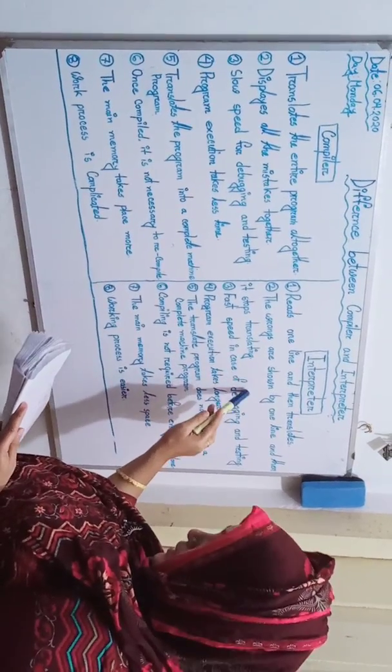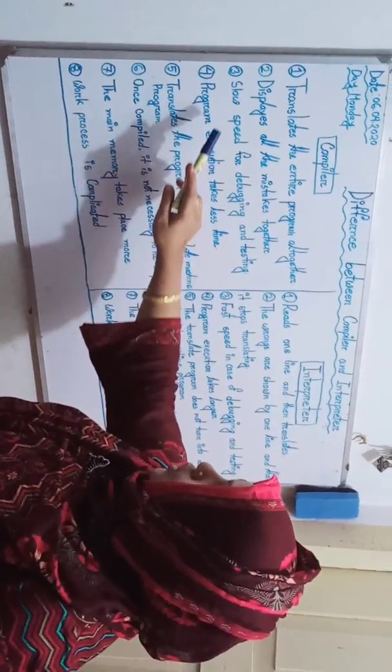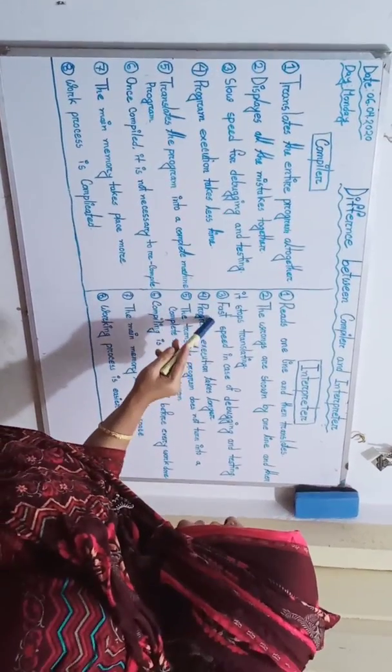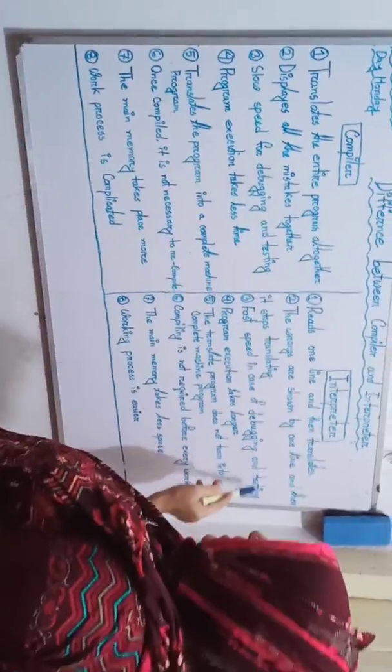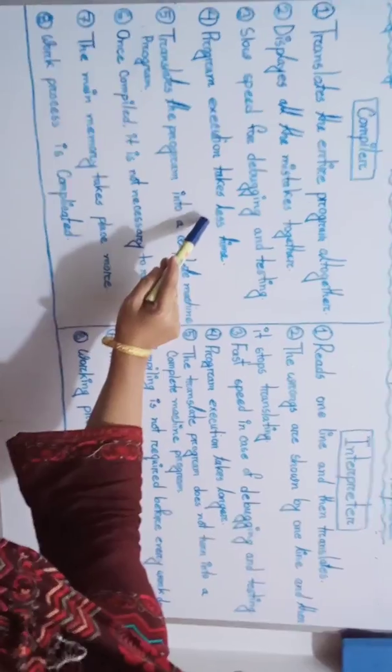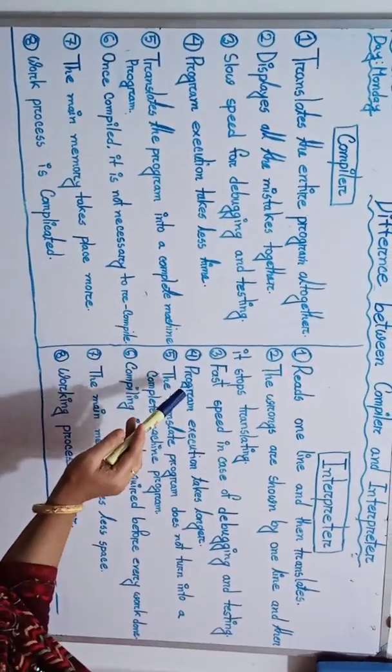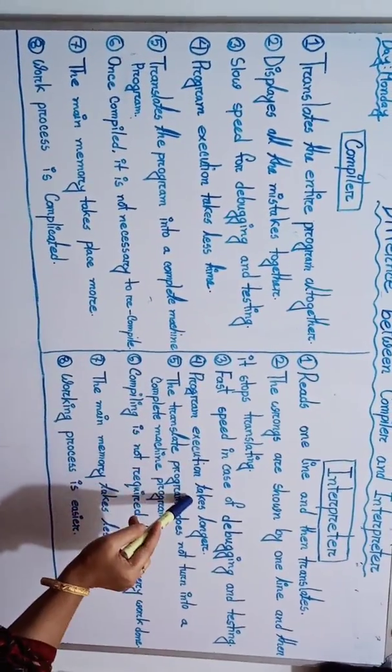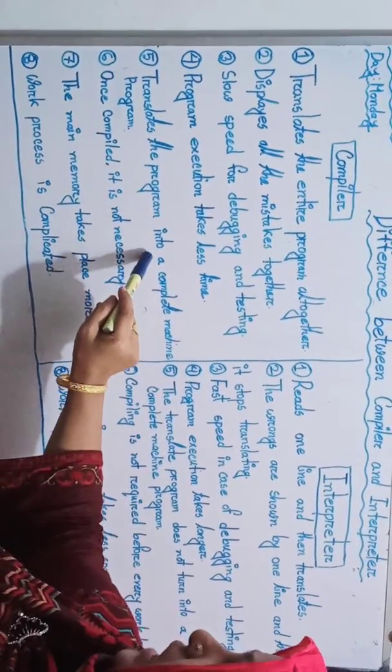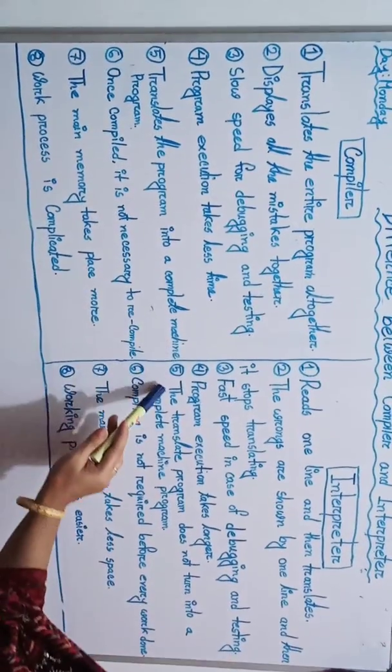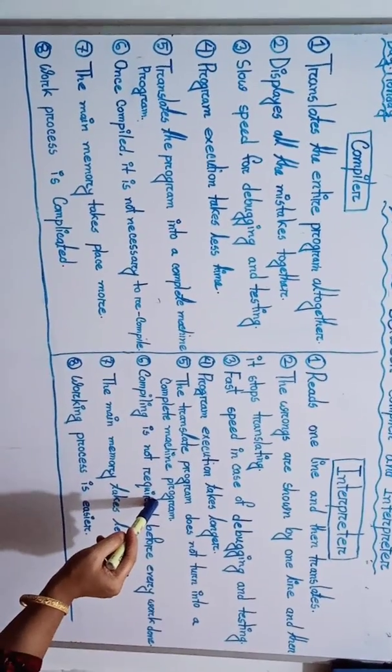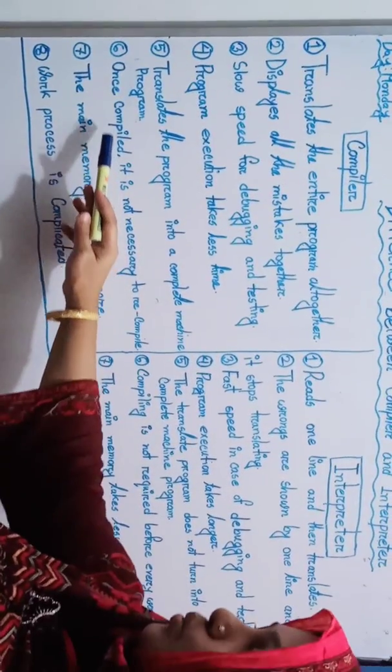Number three: Compiler has fast speed in case of debugging and testing. Number four: Compiler program execution takes less time, interpreter program execution takes longer. Number five: Compiler translates the program into a complete machine program, and interpreter's translated program doesn't turn into a complete machine program.